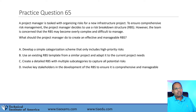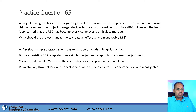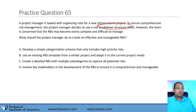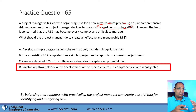Question 65. A project manager is tasked with organizing risks for a new infrastructure project. To ensure comprehensive risk management, the project manager decides to use a Risk Breakdown Structure. However, the team is concerned the RBS may become overly complex. What should the project manager do to create an effective and manageable RBS? A: Develop a simple categorization scheme for high-priority risks only. B: Use an existing RBS from a similar project. C: Create a detailed RBS with multiple subcategories. D: Involve key stakeholders in developing the RBS.